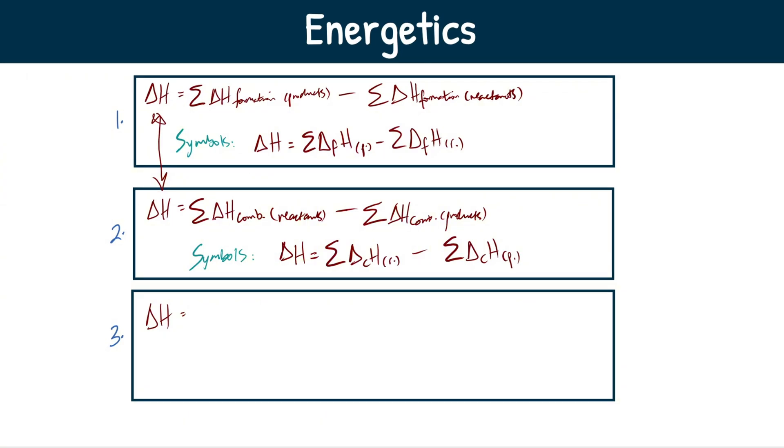Third and final one for enthalpy change here. Very similar again, but slightly different. This is for mean bond enthalpy or mean bond dissociation enthalpy, however you want to call it. Mean bond enthalpy. The equation for this is the sum of the bond energies broken minus sum of bond energies formed.